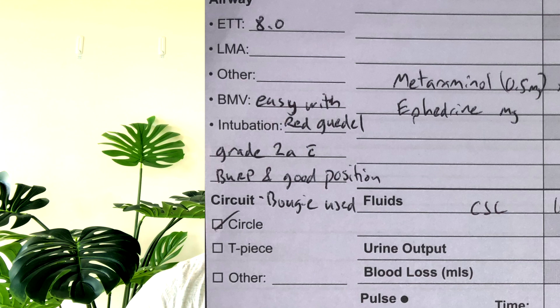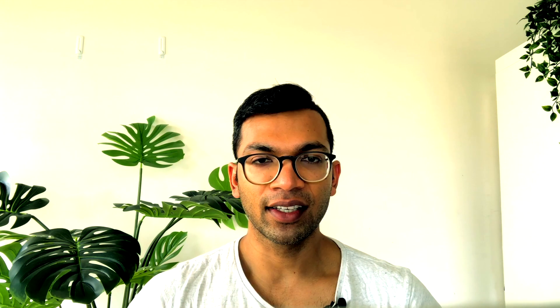Often this can be really detailed. For example, I'll note whether bag mask ventilation was easy or difficult, what kind of airway device was used — if it was a laryngeal mask airway, the size, type, and if there were any leaks. If I intubated the patient, I note my view of the larynx using the Cormac-Lehane grading system. I also write down what endotracheal tube was needed, the size, and if I needed assistance with a video laryngoscope, a bougie, external laryngeal manipulation, or anything else.